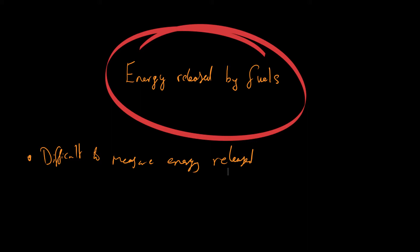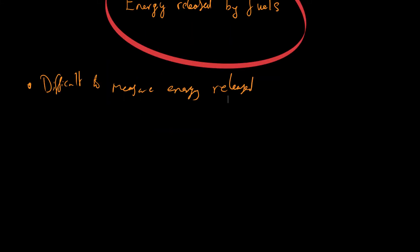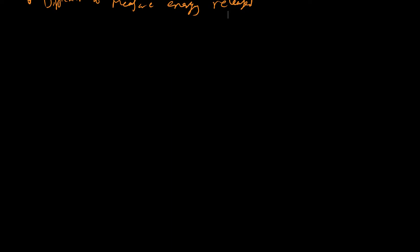When we are measuring, we estimate the amount of energy released. We assume that almost all of the energy released from the fuel is released as heat, and we then use a piece of apparatus known as a calorimeter. This is what we use to measure in a classroom or in a small lab.